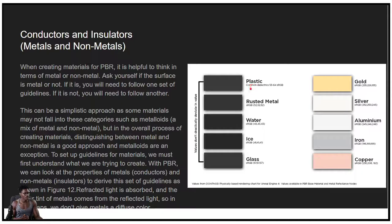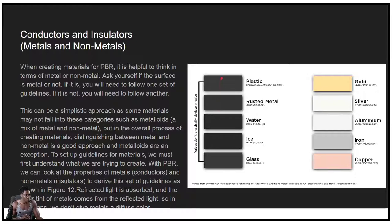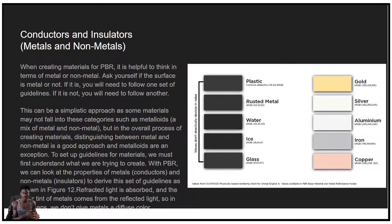If you look at the values for plastic and rusted metal, it's quite negligible — very small, slightly different gray values. The only time it changes is when you're getting metals that have a color in them. When creating metals for PBR, it's helpful to think in terms of metal and non-metal — ask yourself if this surface is a metal or not. If it is, follow one set of guidelines; if not, follow another. Some materials may not fall into these categories, such as metalloids — a mix of metal and non-metal — but distinguishing between metal and non-metal is a good approach.